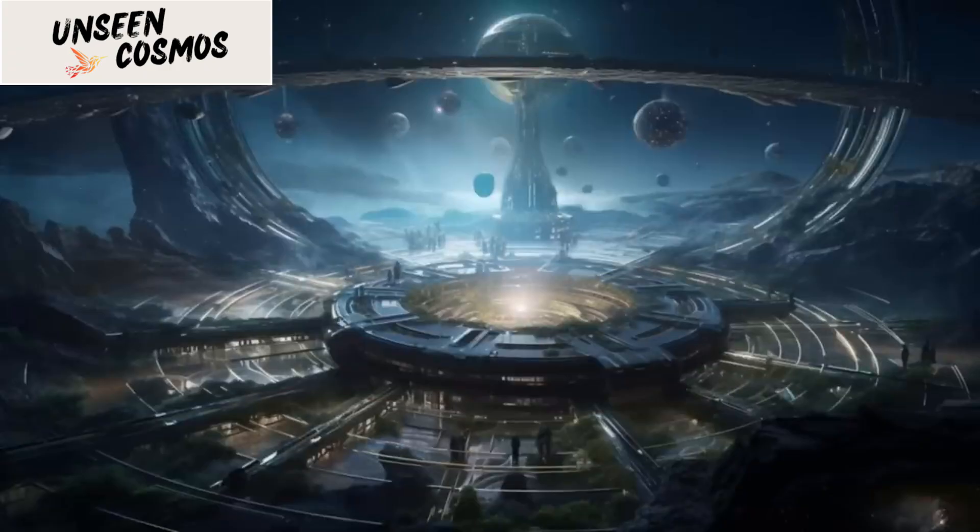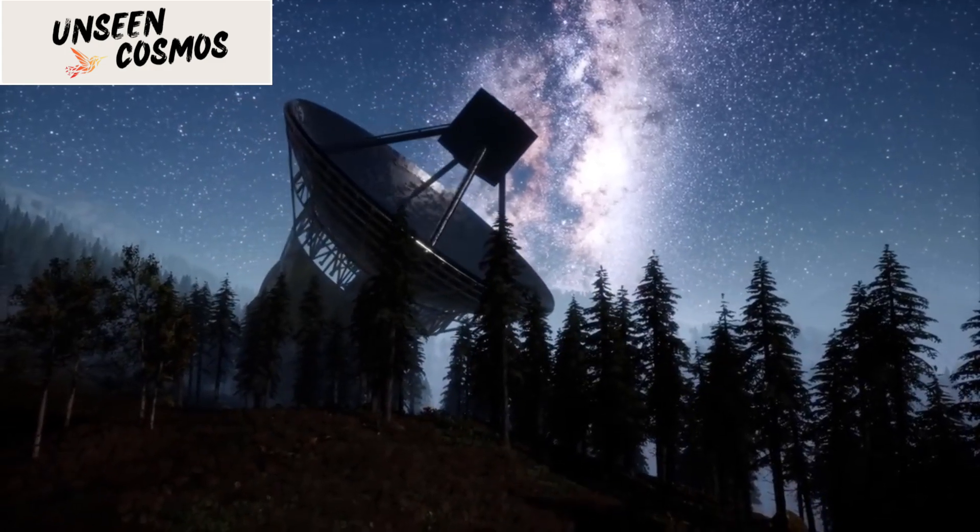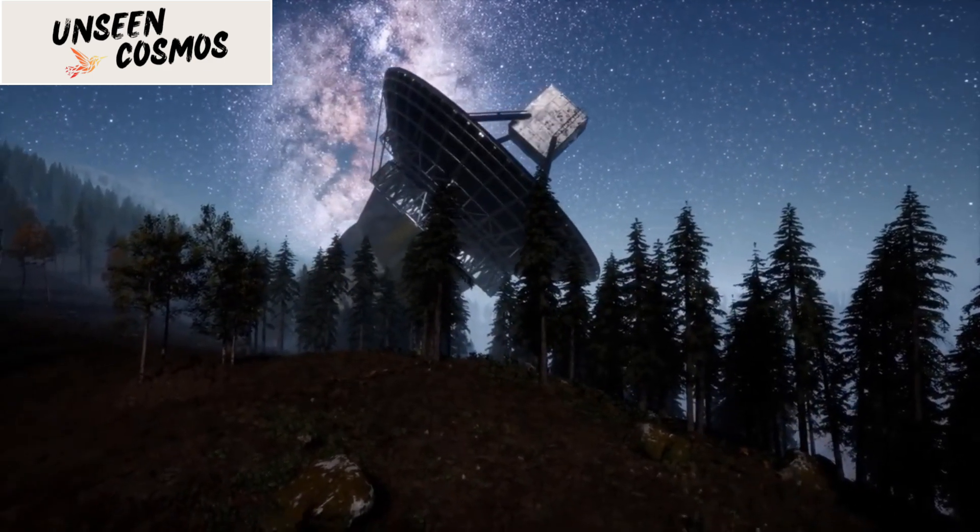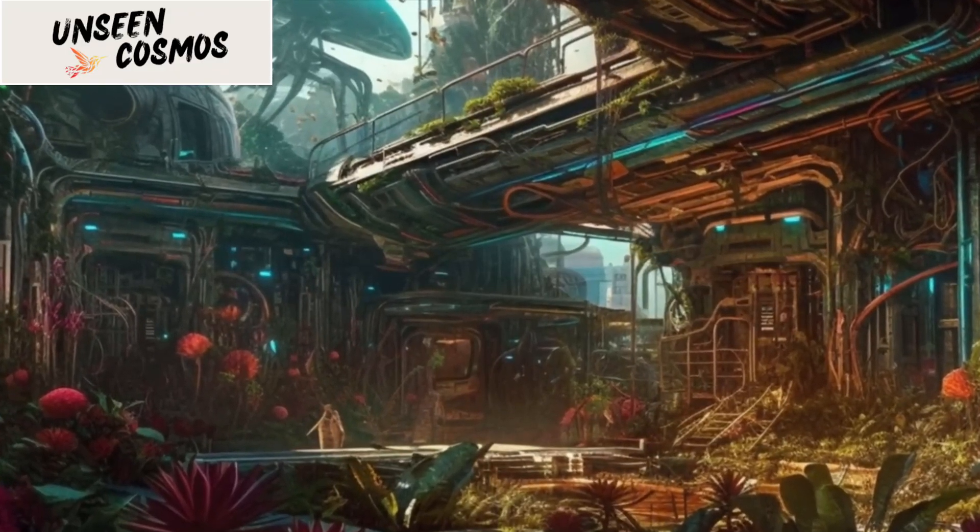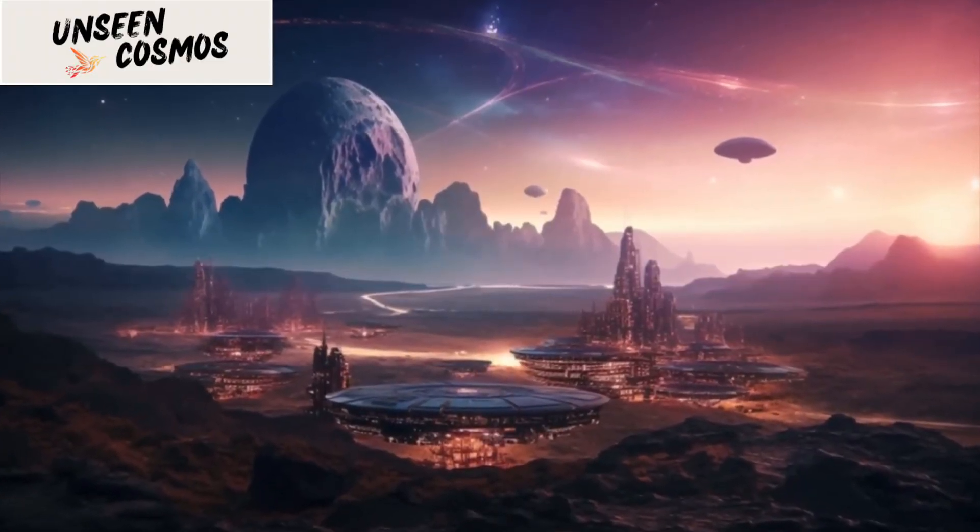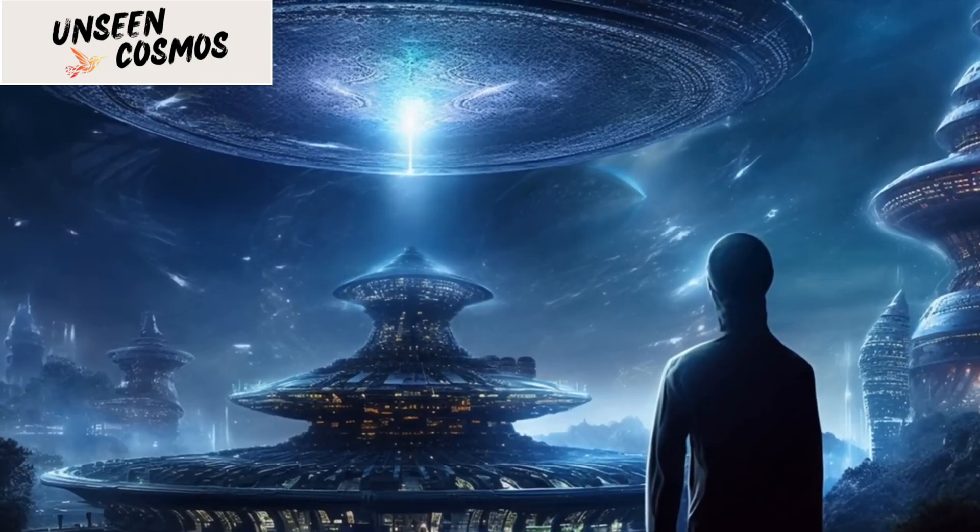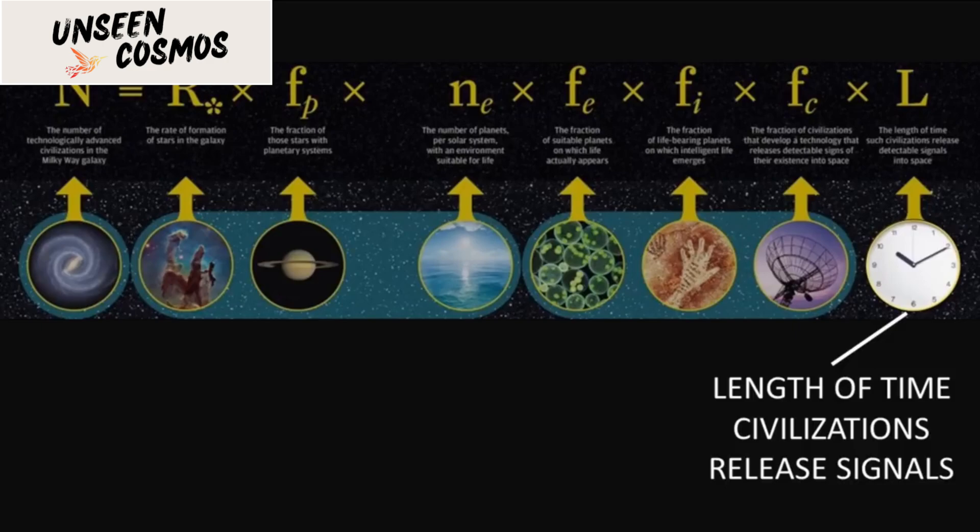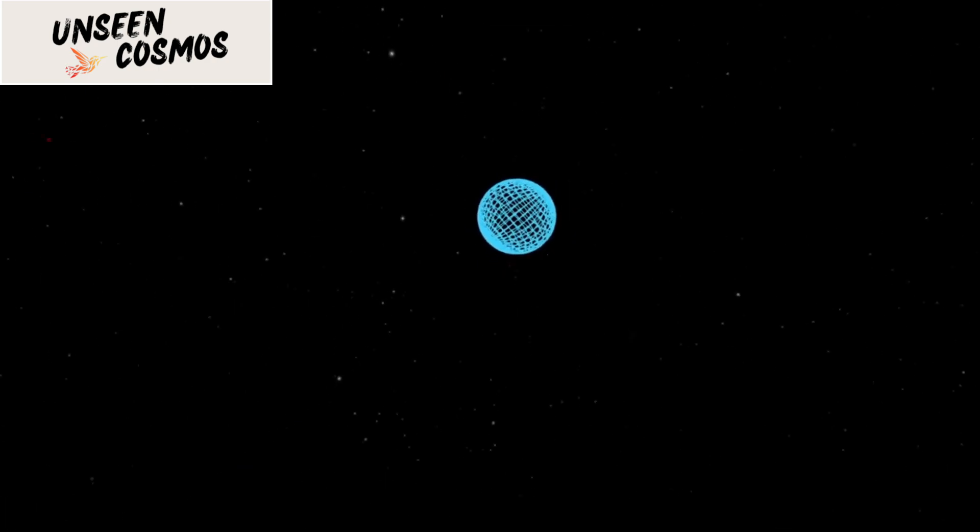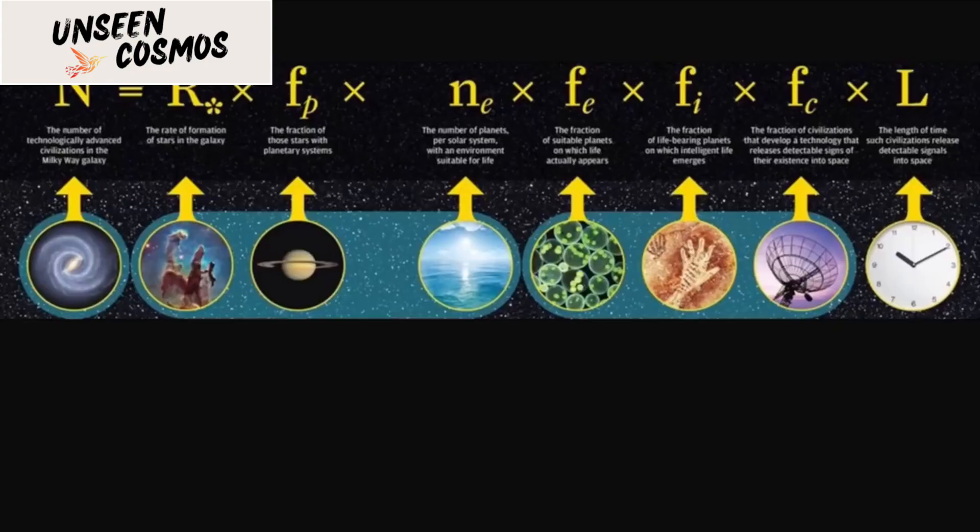Alternatively, it could be ahead of us, suggesting that a significant obstacle awaits us in our future. If the great filter lies ahead of us, it raises concerns about the future of humanity and the potential dangers that await us. This scenario suggests that the emergence of advanced civilizations is rare because most civilizations fail to overcome the challenges posed by the great filter. Some possible candidates for the great filter include the development of intelligent life itself, the transition from unicellular to multicellular organisms, the emergence of complex societies, or even the development of advanced technology.